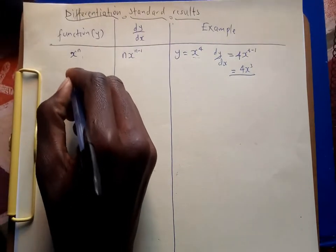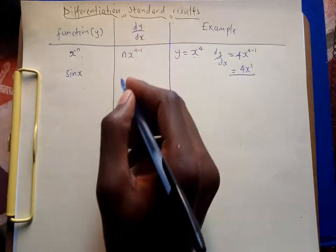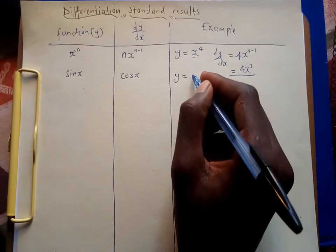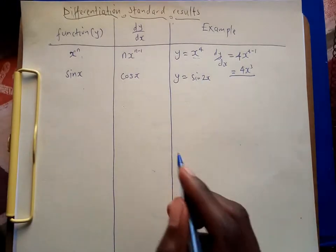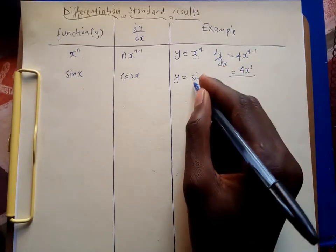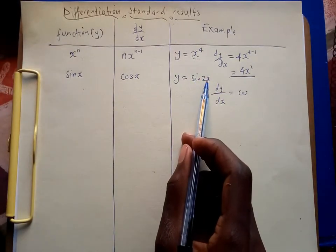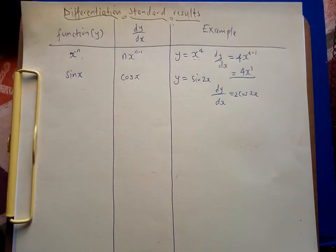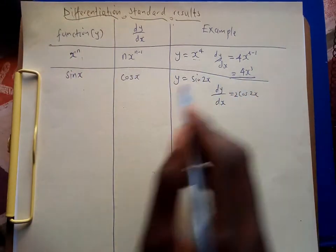Now we are going to look at sine. If you are given the function sin(x), its derivative is cos(x). For example, if you have y = sin(2x), then dy/dx: the 2 comes in front, and sine becomes cosine, giving 2cos(2x). That is the rule for sine.